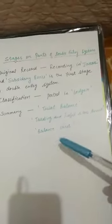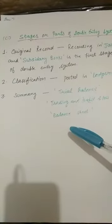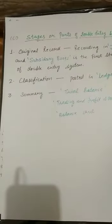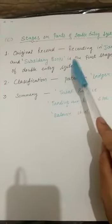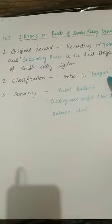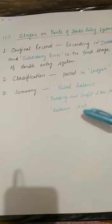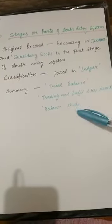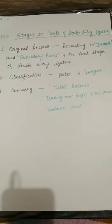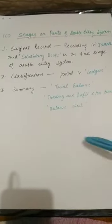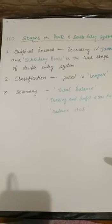Now the third topic: stages of double entry system. There are three stages. First is original record — recording in journal and subsidiary books. Second is classification — posting entries into the ledger. Third is summary — using ledger closing balances to make trial balance, trading account, profit and loss account, and balance sheet at the end of the financial year. All these topics will be discussed in detail in the coming chapters.